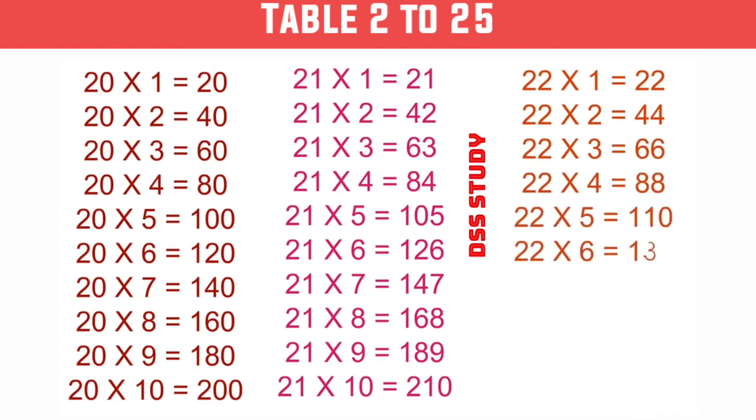22×6 is 132, 22×7 is 154, 22×8 is 176, 22×9 is 198, 22×10 is 220.